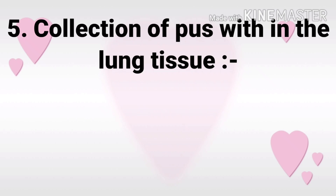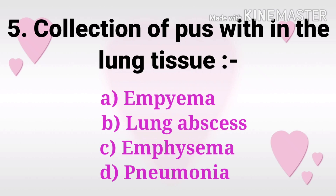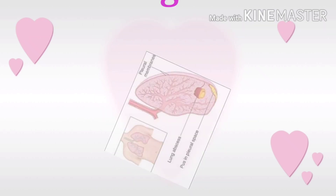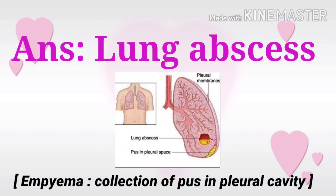Question 5: Collection of pus within the lung tissue? The options are emphysema, lung abscess, emphysema, and pneumonia. The answer is lung abscess. Collection of pus in the lung tissue is lung abscess, and collection of pus in the pleural cavity is emphysema.